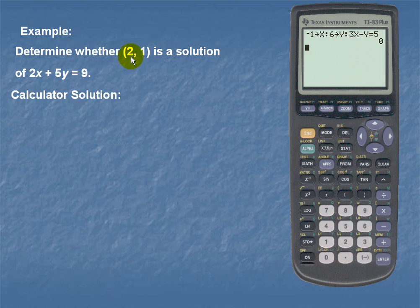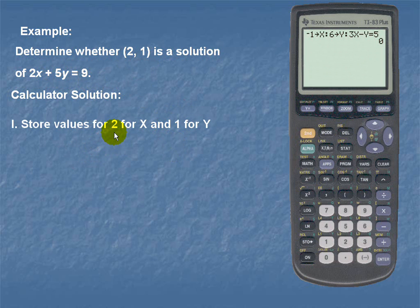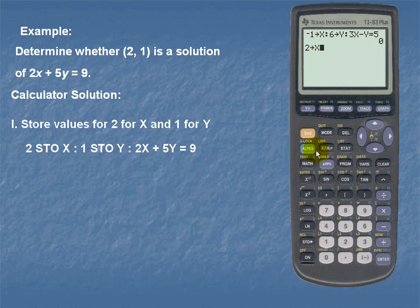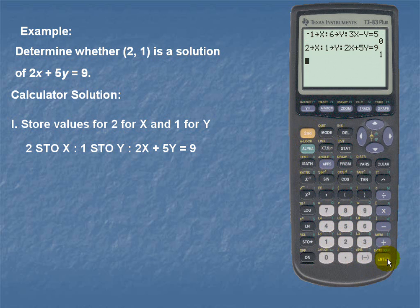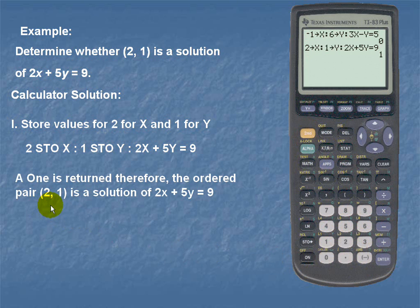Let's take a look at the second example using the calculator solution. We'll determine whether the ordered pair 2 comma 1 is a solution of the equation 2x plus 5y is equal to 9. Here are the keystrokes: we'll take 2, store it for x with a colon, take 1, store it for y, use another colon, and then enter our equation: 2x plus 5y is equal to — using our test — 9. A 1 is returned, therefore the ordered pair 2 comma 1 is a solution of the equation 2x plus 5y is equal to 9.